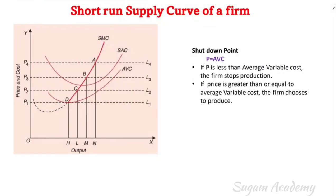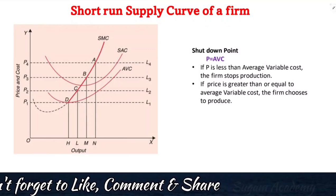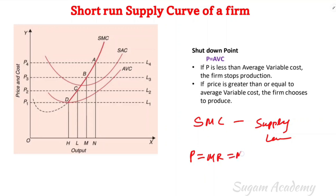Hello everyone. In this class we are going to discuss the short-run supply curve of a firm. This is from microeconomics, plus three, third semester. So what is the supply curve in short-run? In the case of a perfect competition market, the short-run marginal cost curve is the supply curve. In short-run, price is equal to MR is equal to MC.